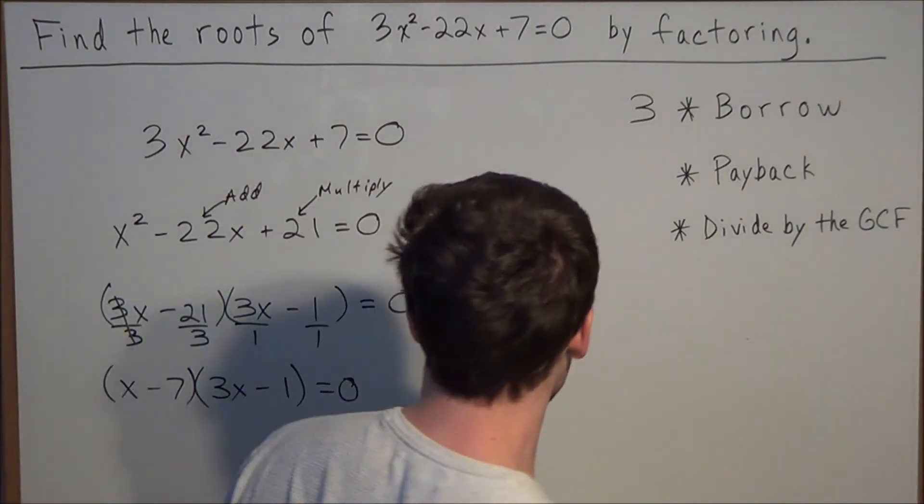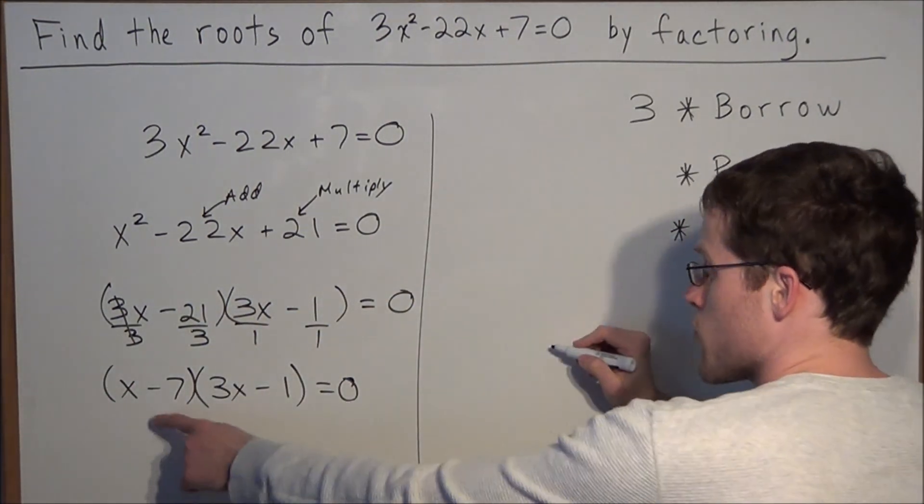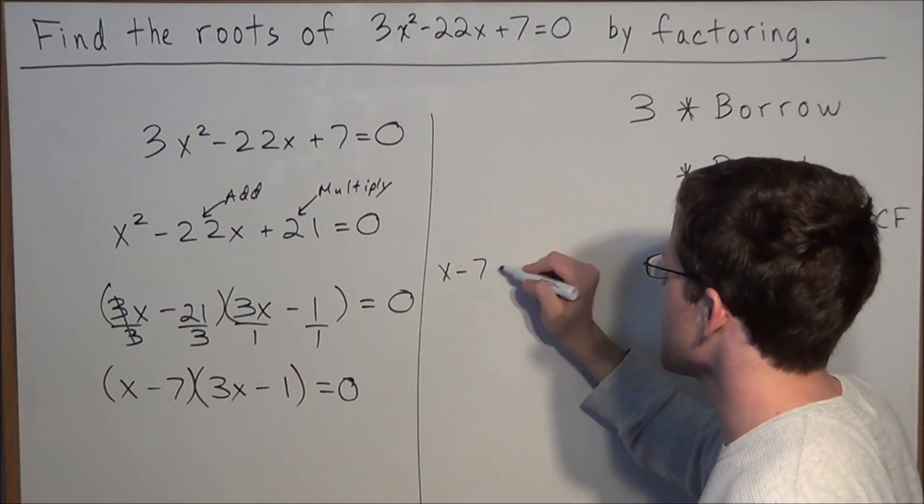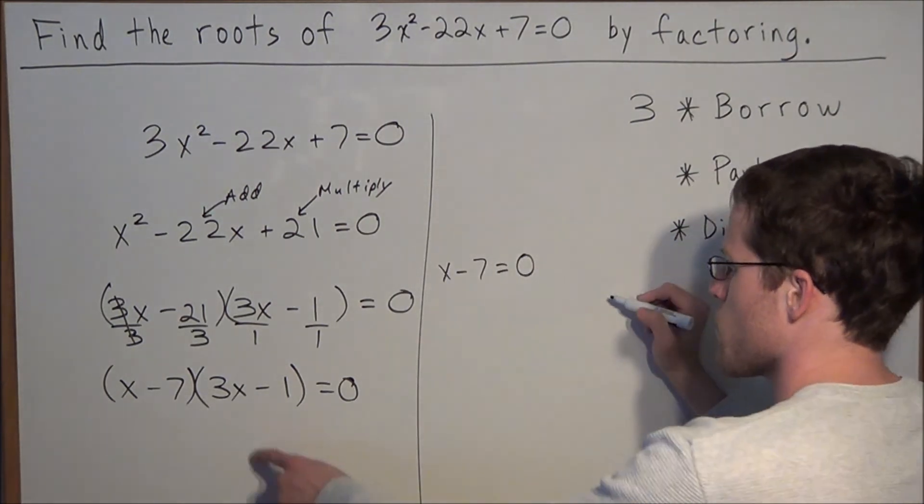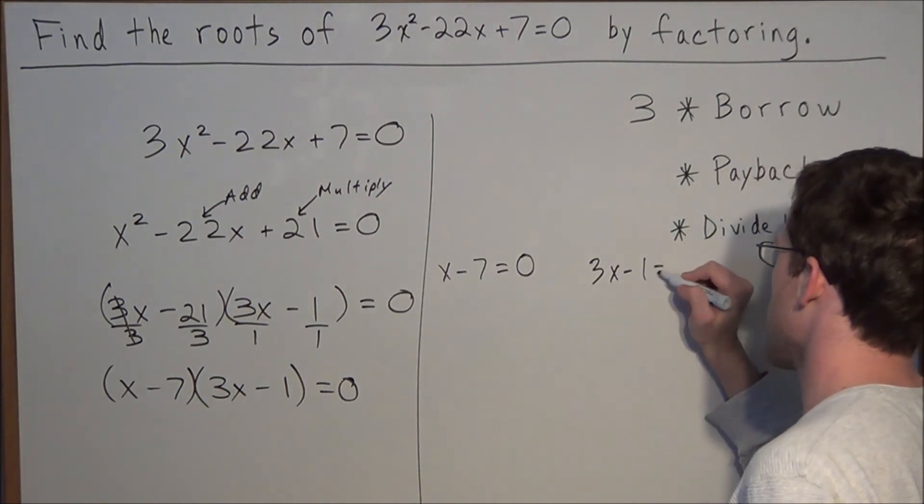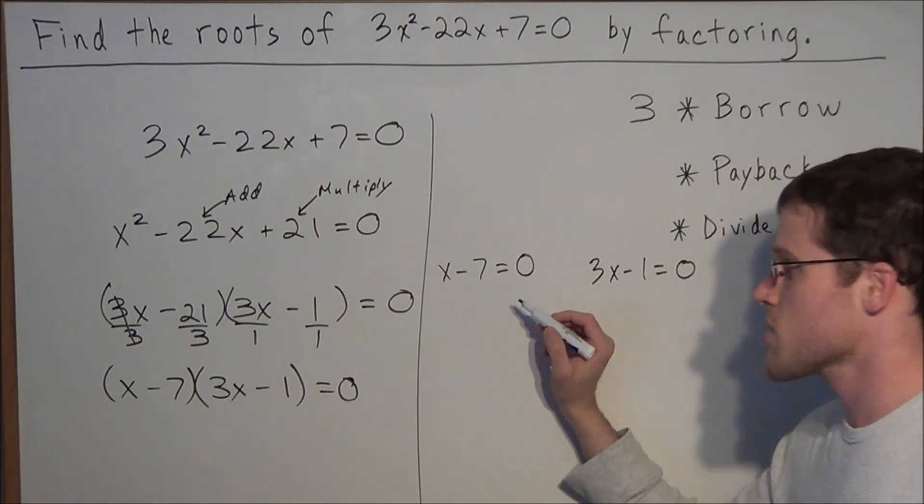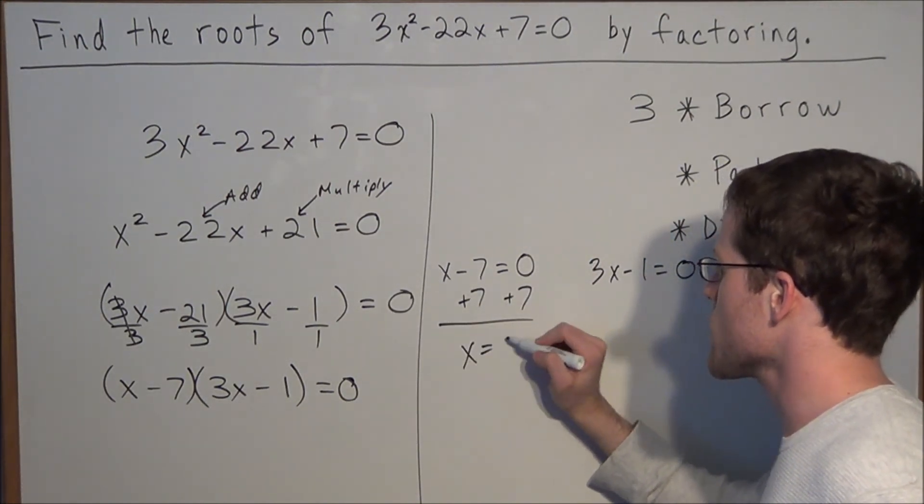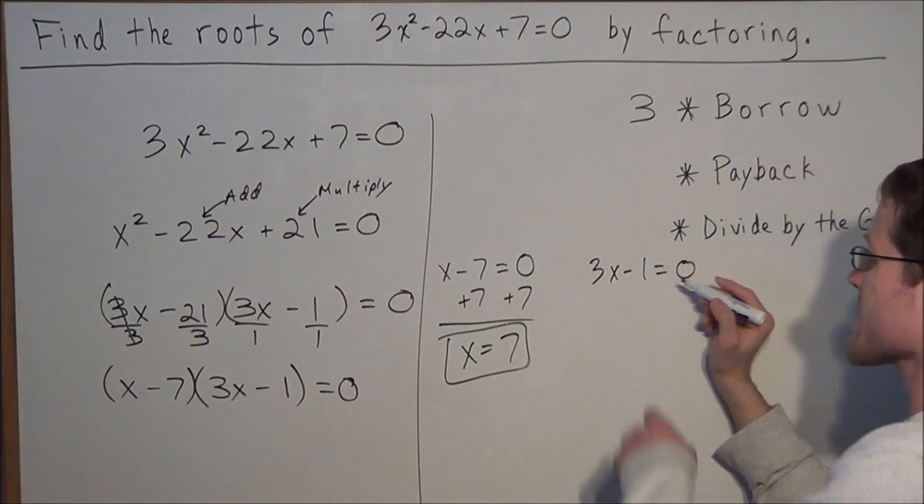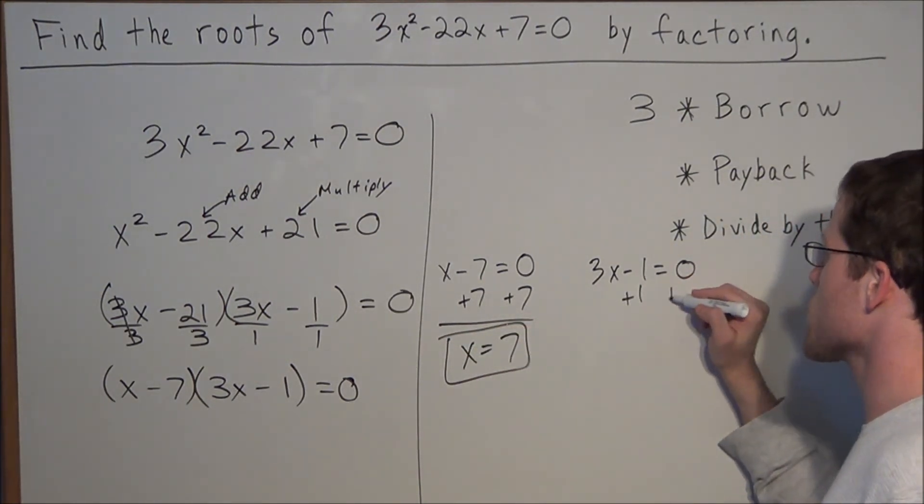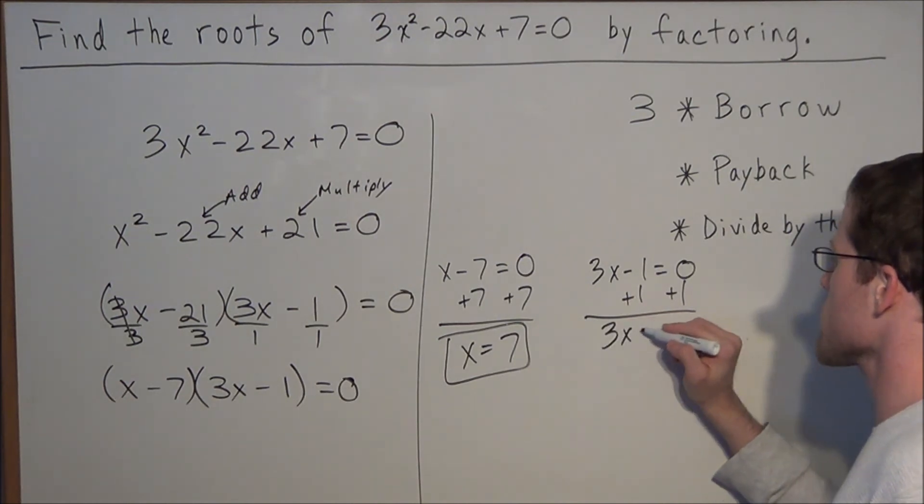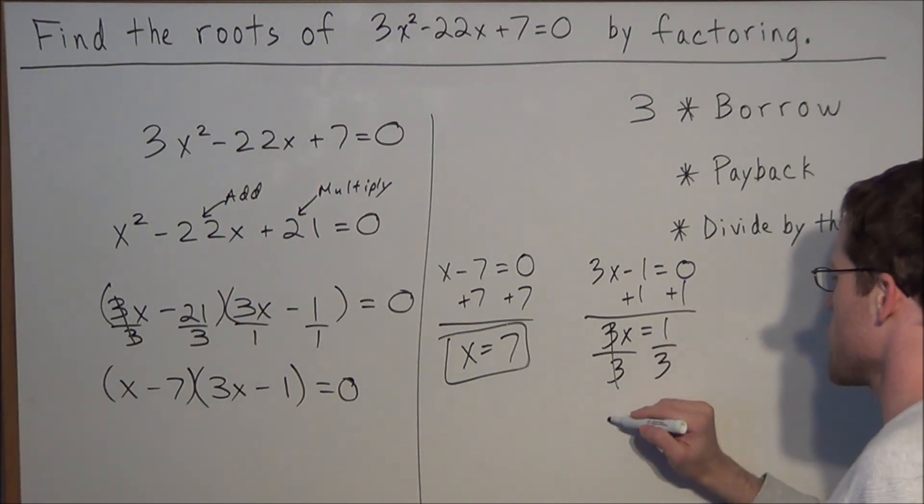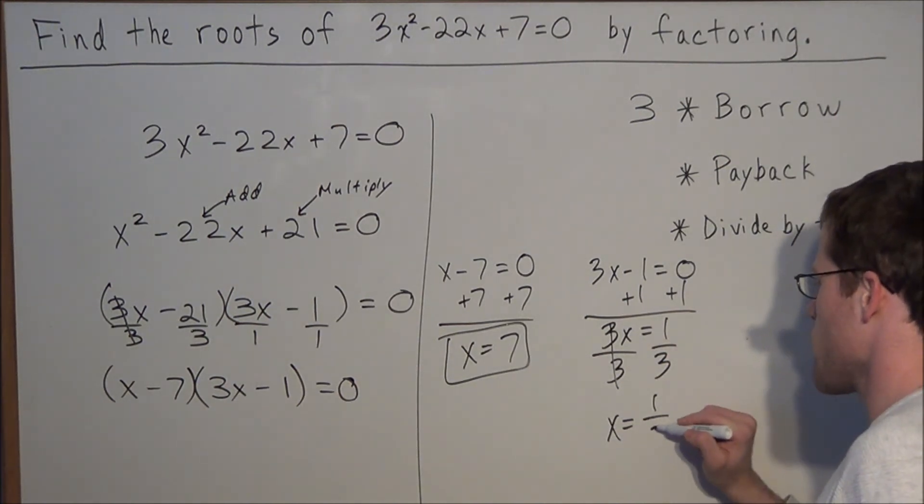Now that we have our two factors, to find the roots we are going to set each of them equal to 0. We are solving x - 7 = 0 and 3x - 1 = 0. To solve the first equation, we add 7 to both sides and we have x = 7. That is our first root. To solve the second equation, we add 1 to both sides and now we have 3x = 1. Divide both sides by 3, and your second root is x = positive 1 over 3.